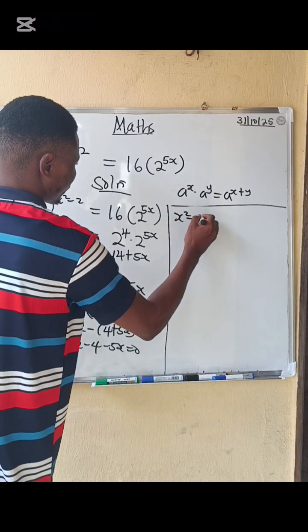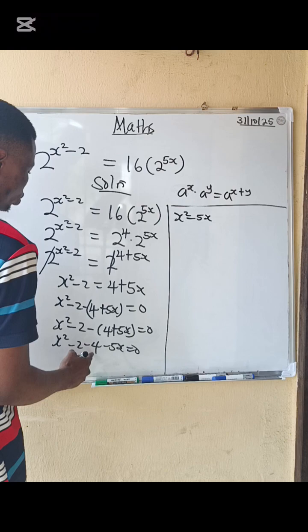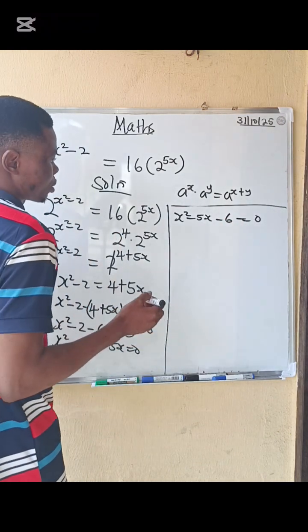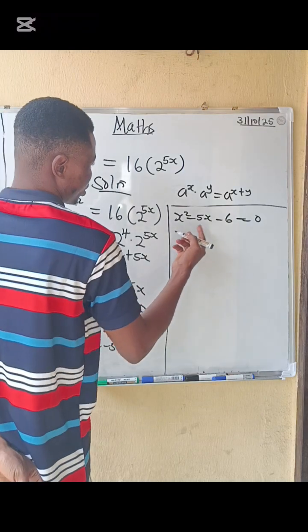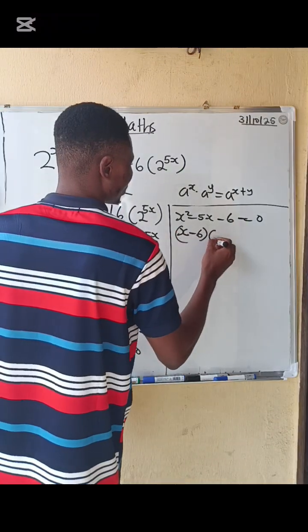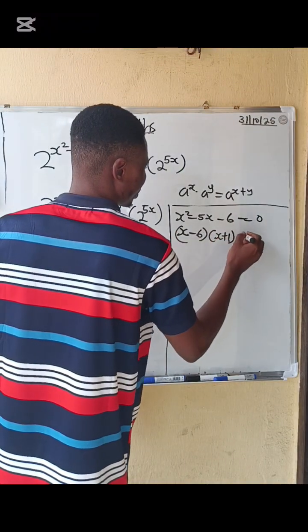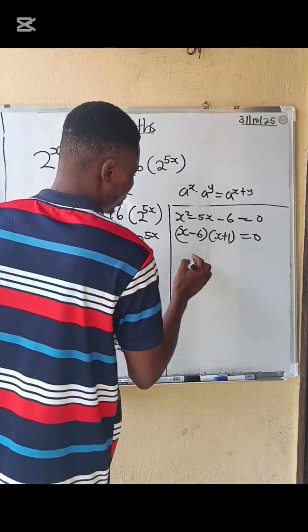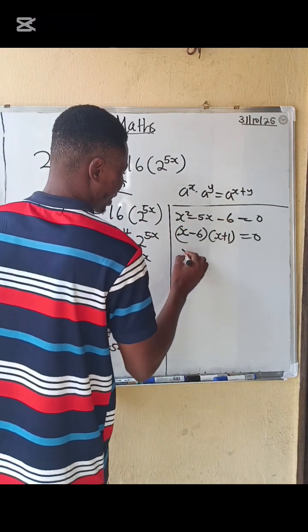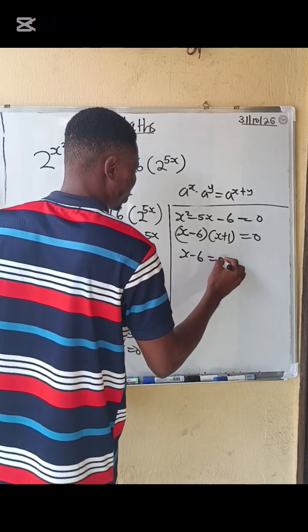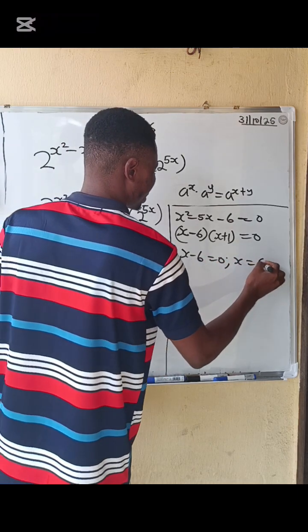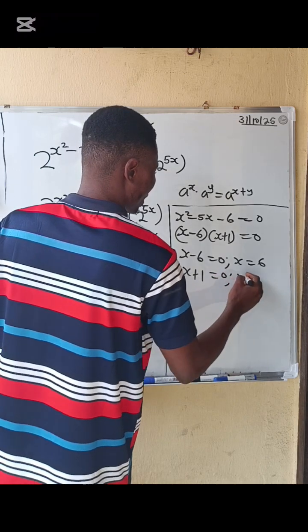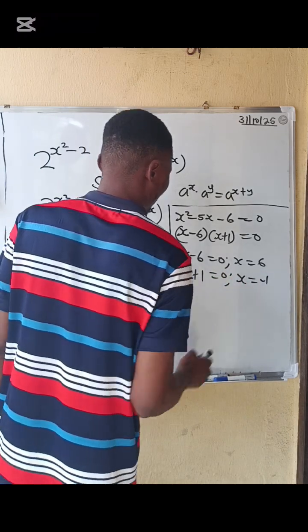x squared minus 5x minus 2 minus 4 minus 6 equals to 0. We factorize. When you factorize this, we have x minus 6 into x plus 1 equals to 0. So either x minus 6 equals 0, then x equals 6, or x plus 1 equals 0, then x equals minus 1.